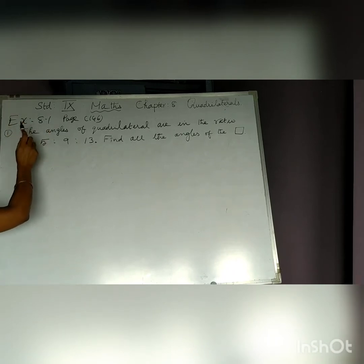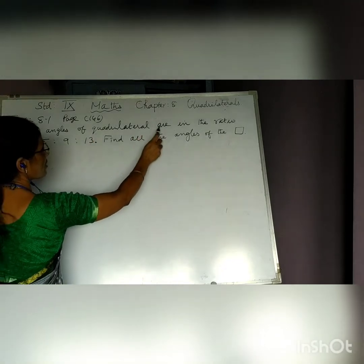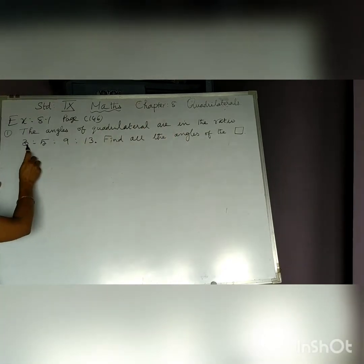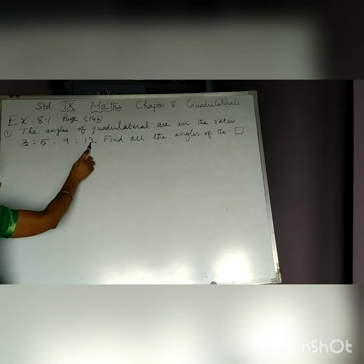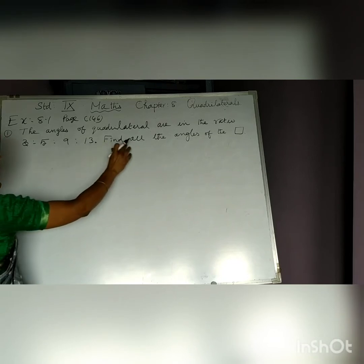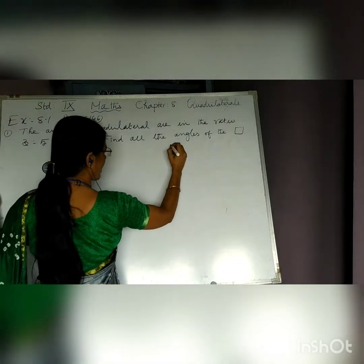Size 8.1, first question: the angles of a quadrilateral are in the ratio 3:5:9:13. The ratios of the angles are given. Find all the angles of the quadrilateral.